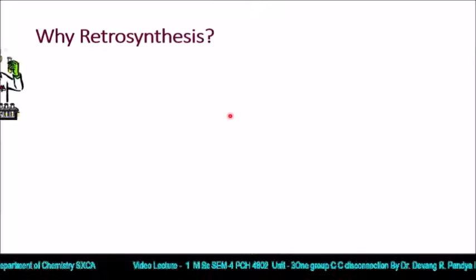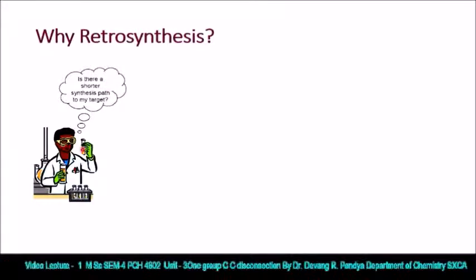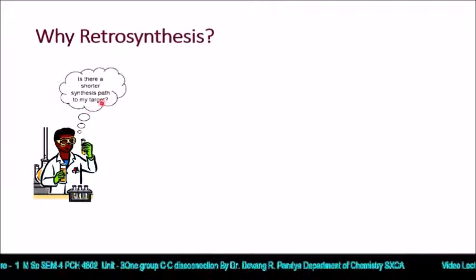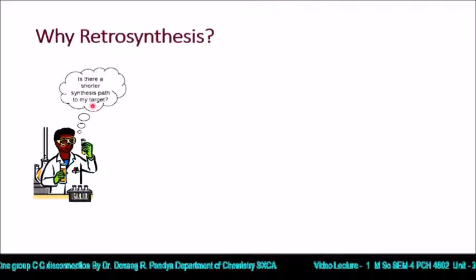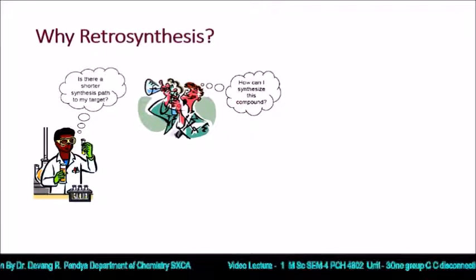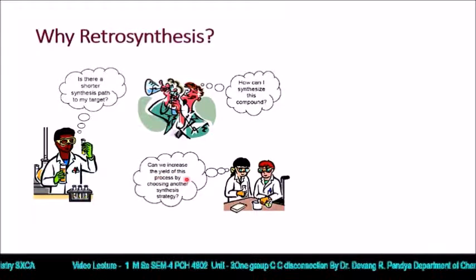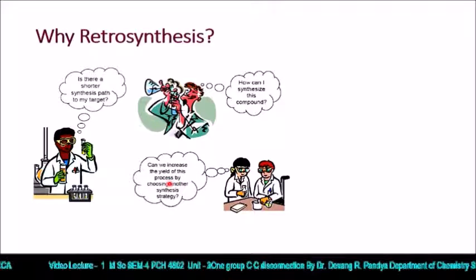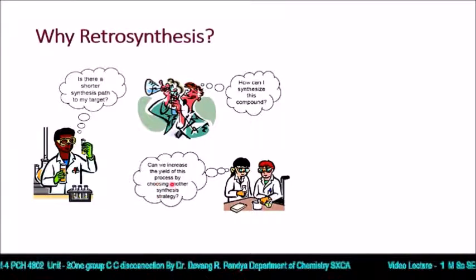Why retrosynthesis? Is there a shorter synthesis path to my target? A chemist always tries to think that way. How can I synthesize this compound? It is a very puzzling question to an organic chemist. Can we increase the yield of this process by choosing another synthesis strategy? It is very important which process you use to synthesize your target molecule, your desired end product.